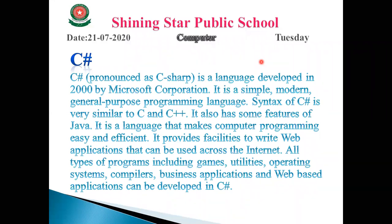For example, if a previous product has five features, the new one might have eight. C language came first; then C++ was introduced in 1983–1985 at Bell Laboratories with all the features of C plus more. Then in 2000, C Sharp was developed, containing the features of both C and C++, along with additional features not found in C or C++.